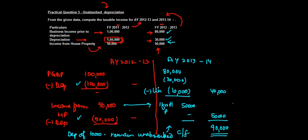We have assumed that the fifty thousand figure for income from house property is already after all deductions. Therefore, we haven't separately reduced anything for repairs and so on. If it had been given before standard deductions, municipality tax, etc., we would have applied the thirty percent reduction, but here fifty thousand is the net amount after all adjustments.